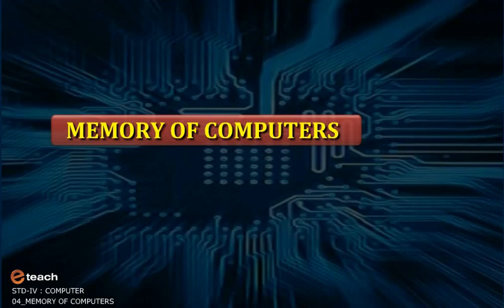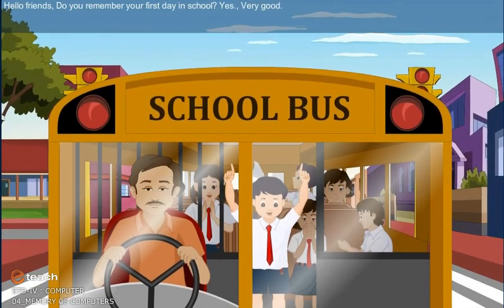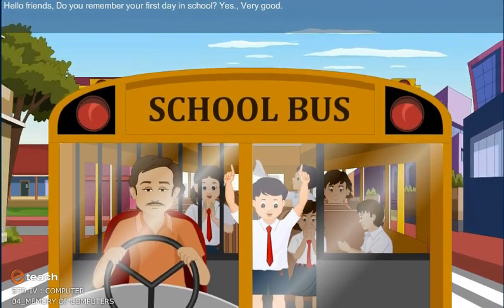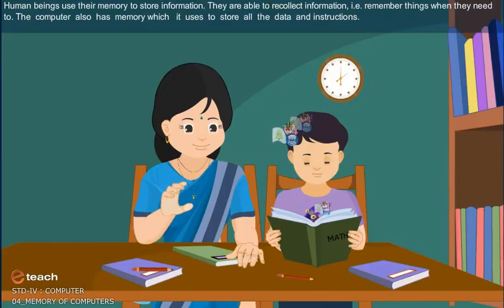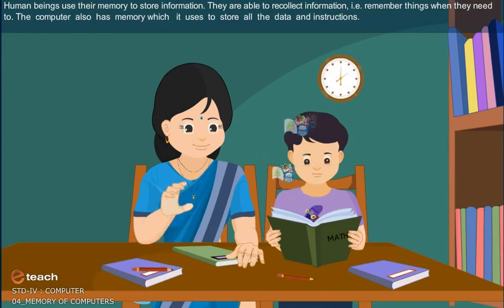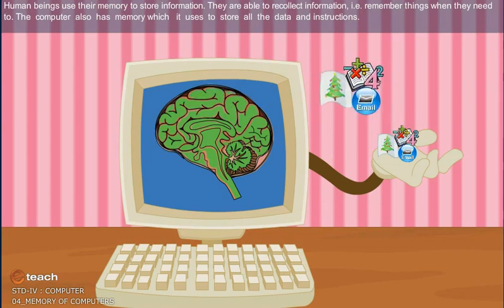Memory of Computers — learning about the various types of memory of a computer. Hello friends, do you remember your first day in school? Human beings use their memory to store information. They are able to recollect information — that is, remember things when they need to. The computer also has memory which it uses to store all the data and instructions.